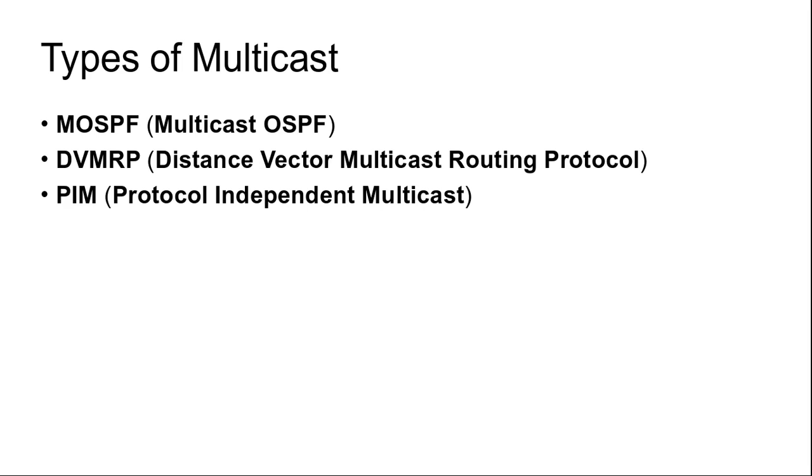When a router with no group members among its own hosts has received such messages on all the lines to which it sends the multicast, it too can respond with a pruning message. In this way the spanning tree is recursively pruned. DVMRP, Distance Vector Multicast Routing Protocol, is an example of a multicast routing protocol that works this way.